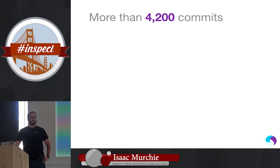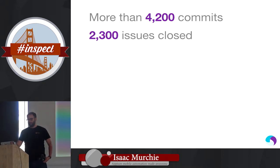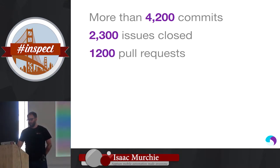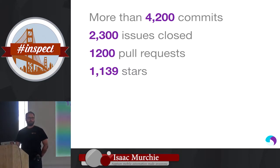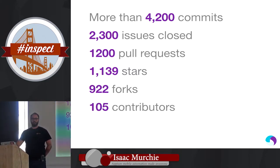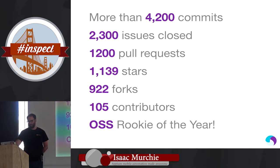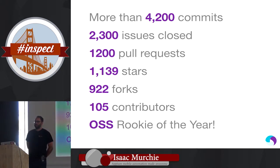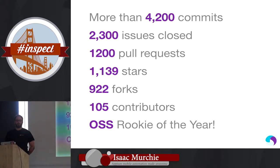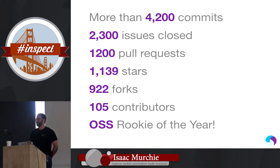Appium is open source. It's had about 4,200 commits to date, over 2,000 issues logged and closed with probably 100 still open, 1,200 pull requests, 1,200 stars, 900 forks, and over 100 people have worked on it. It's an active community of developers, and it's also rookie of the year for open source. We also have about 20,000 downloads a month, so there are a lot of users in addition to developers.